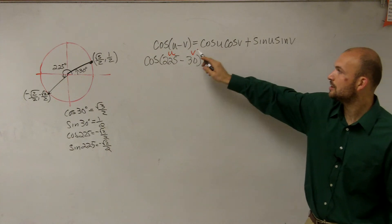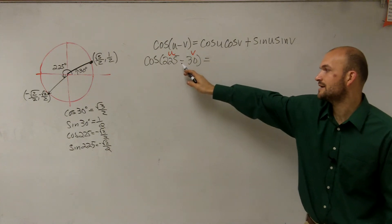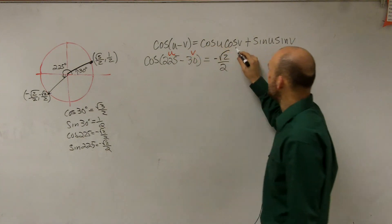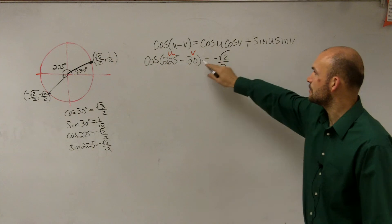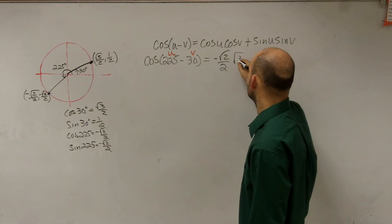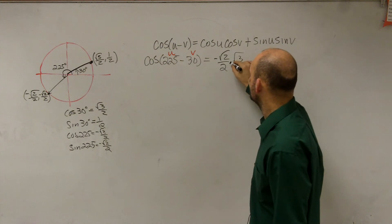So the cosine of u, which is cosine of 225 degrees, that's going to be a negative square root of 2 over 2, times the cosine of v, which is 30 degrees. So the cosine of 30 degrees is the square root of 3 over 2. Multiply.